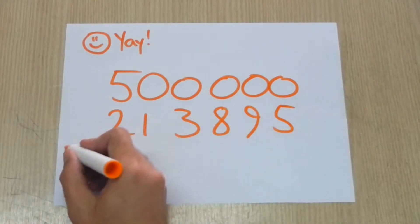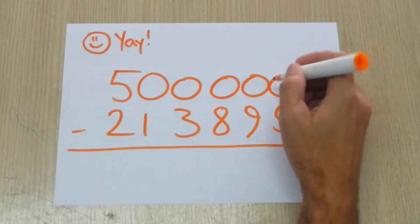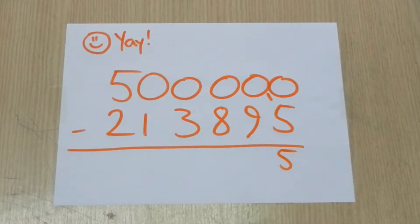The first part is like normal. Borrow 10 to get 10 take away 5 equals 5 in the ones column.